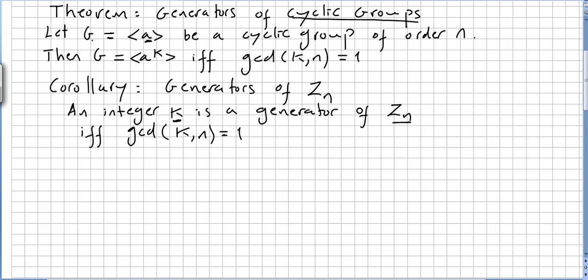So if G is generated by an element, G is a cyclic group. Let G be a cyclic group of order N. Then G is also generated by all A to the power of K if and only if the greatest common divisor between K and N is 1, between this K and this N here. So the power here and the order.